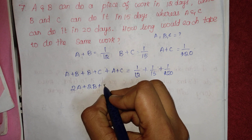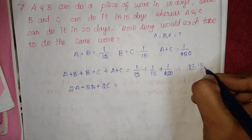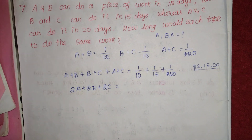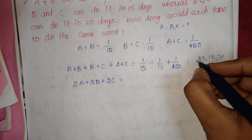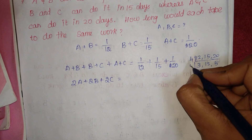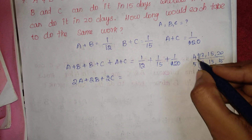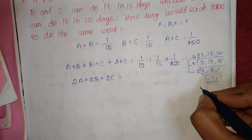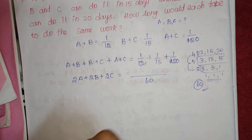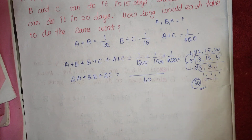So 2(A+B+C) equals the sum. The numbers are 12, 15, and 20. We find the LCM. We multiply: 4 times 5 is 20, 20 times 3 is 60, so LCM is 60. Then 60 by 12 is 5, 60 by 15 is 4, and 60 by 20 is 3.